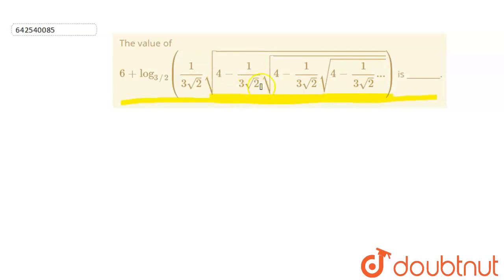4 minus 1 by 3 root 2, under root 4 minus 1 by 3 root 2, under root 4 minus 1 by 3 root 2. Actually, this is a repeating term till infinity.